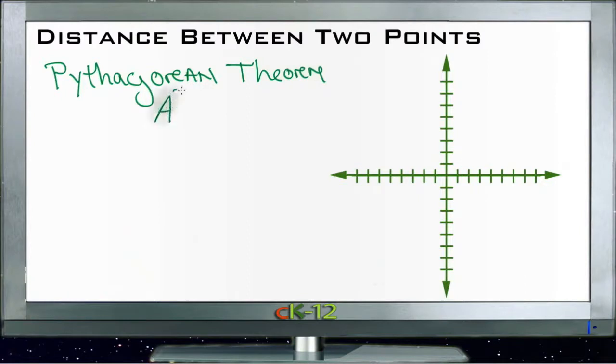The Pythagorean theorem is a squared plus b squared equals c squared. What that tells us is that we can find the missing side of a right triangle if we know the other two sides.